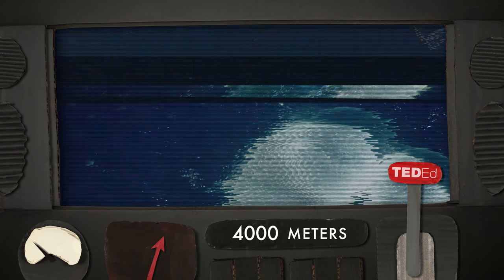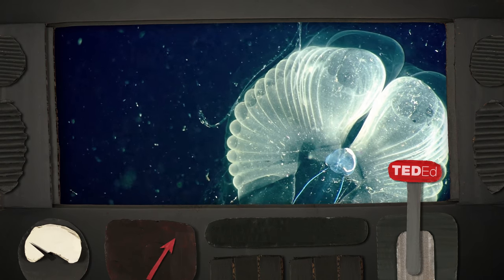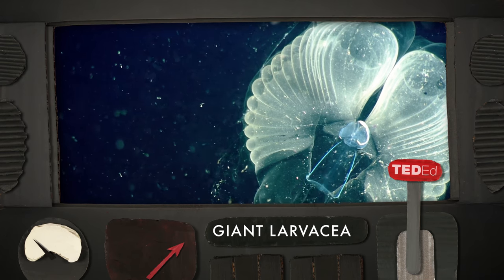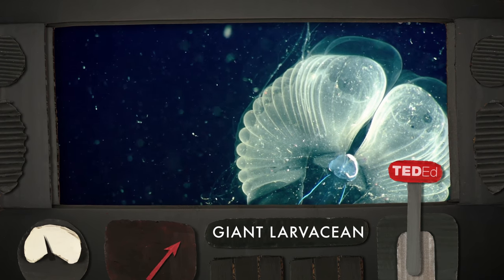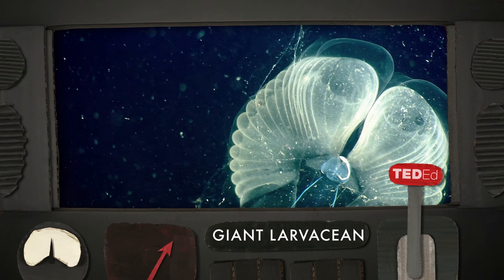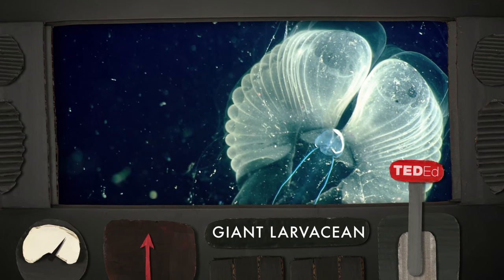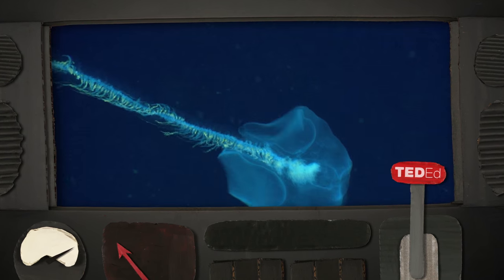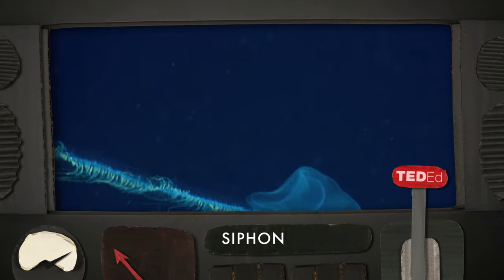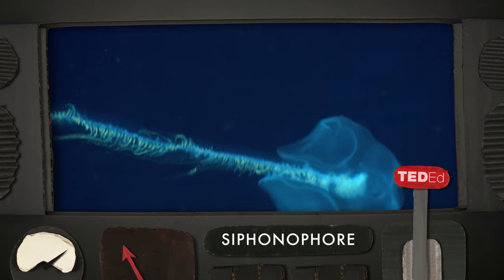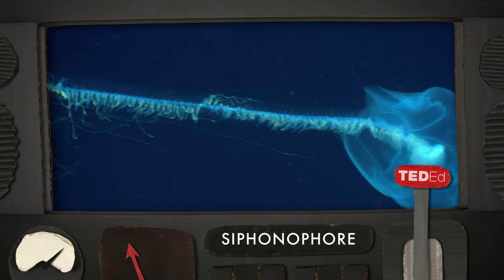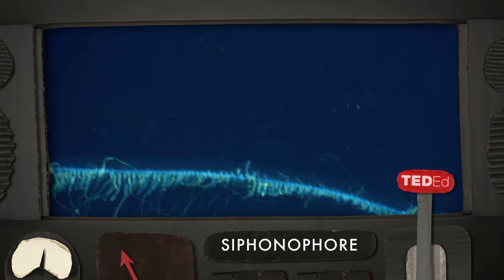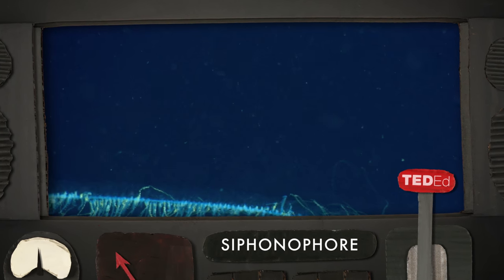And so we can answer really interesting questions about this organism — this is a larvacean that creates a feeding current and forces fluid through their mucus house and extracts nutrients. And then this animal, this is a siphonophore, and they can get to lengths about half the size of a football field. And they're able to swim vertically in the ocean by just creating jet propulsion.